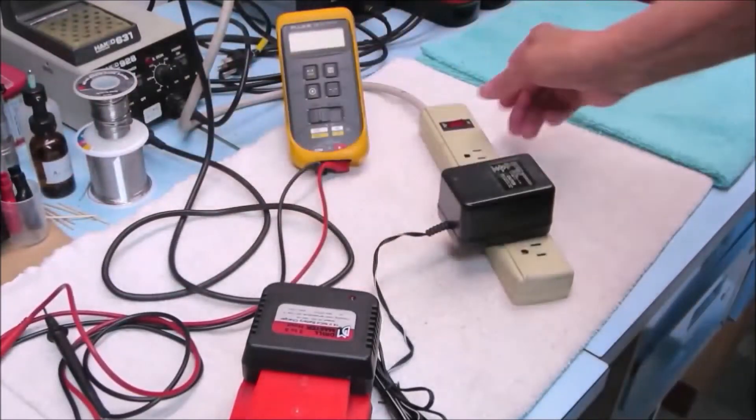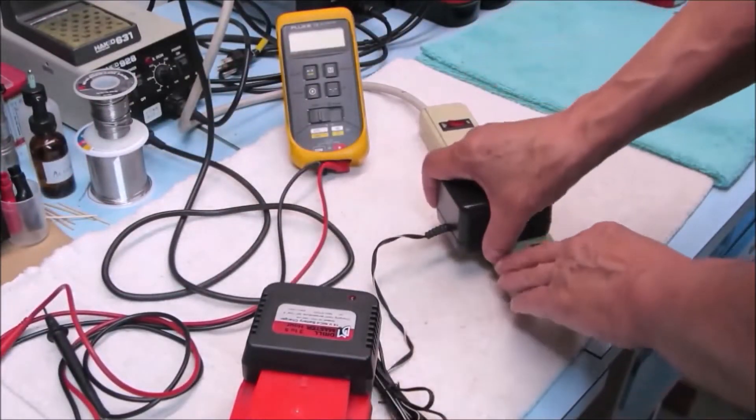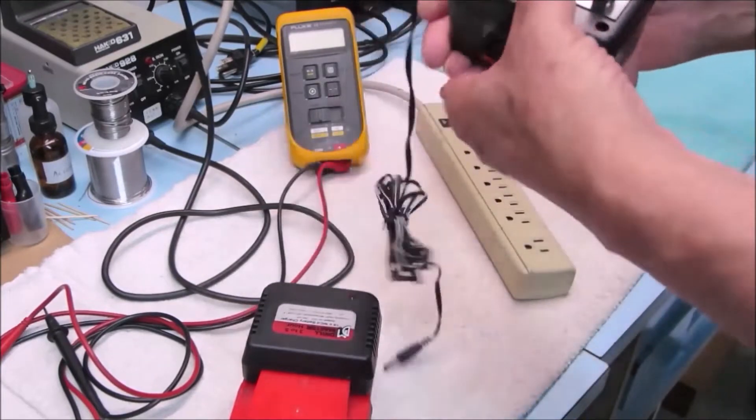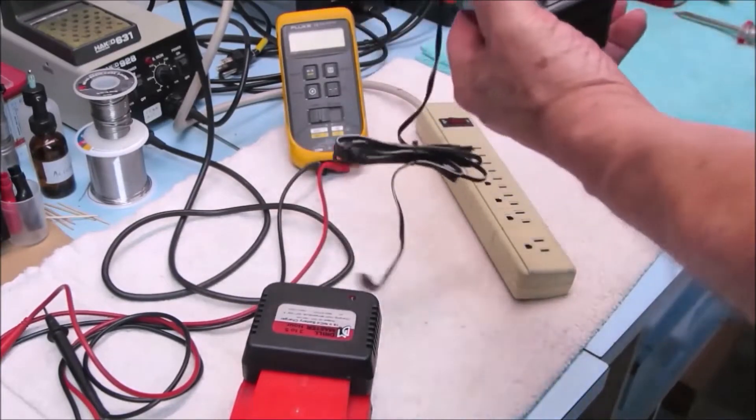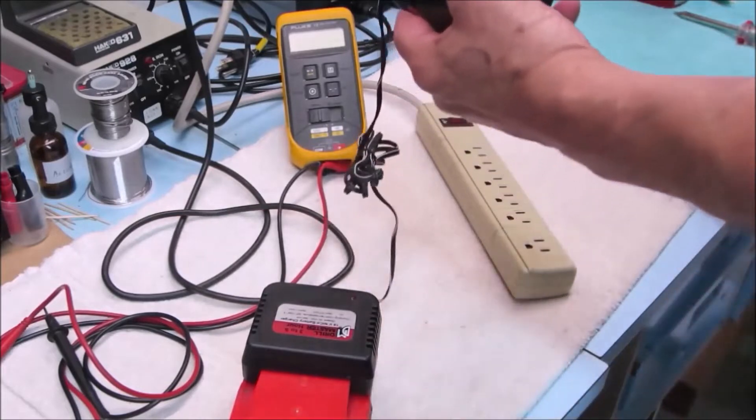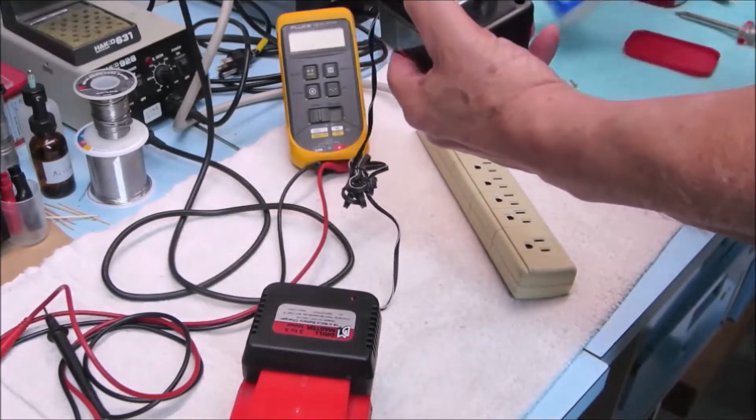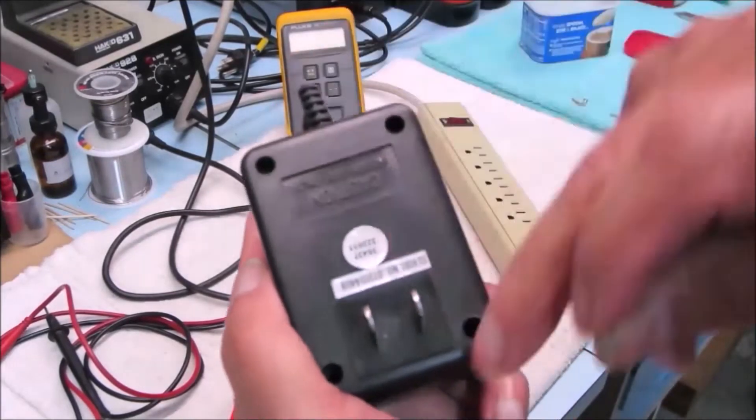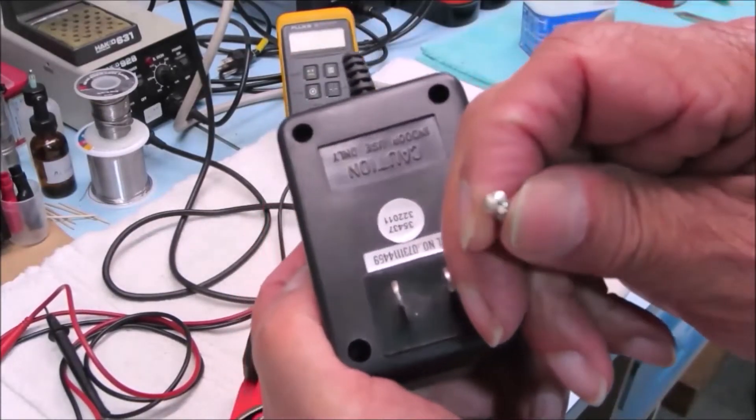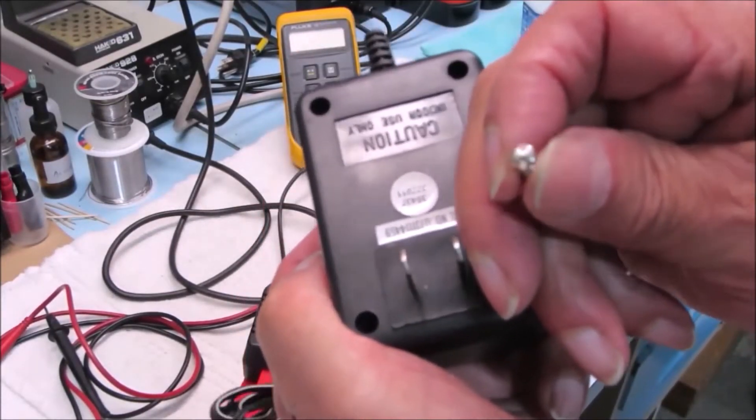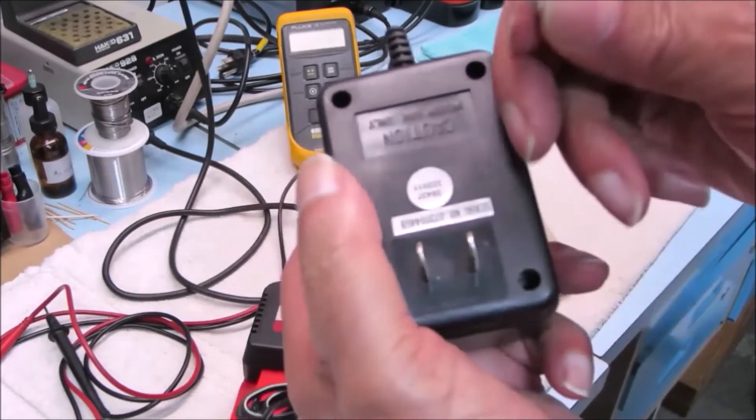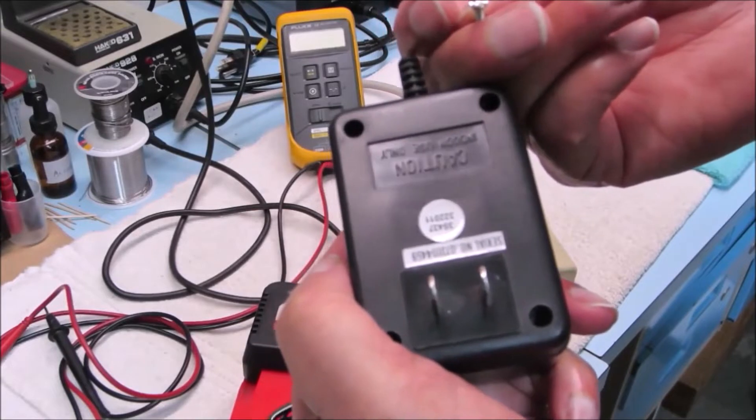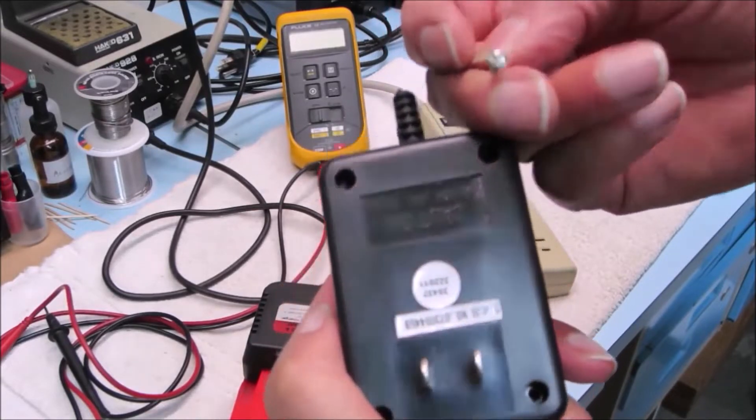All right, turn this off. Let's fix it. To take this apart, there's just four screws. These are security screws, meaning they're not Phillips, they're not slotted. You need to buy yourself a little set of security screwdriver bits. They're cheap enough.